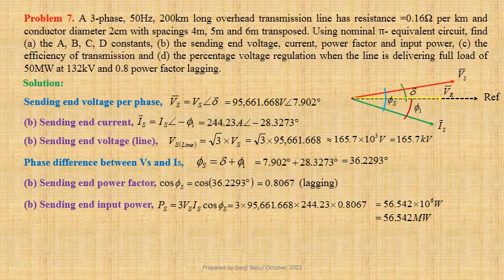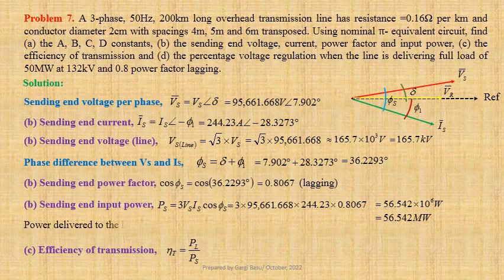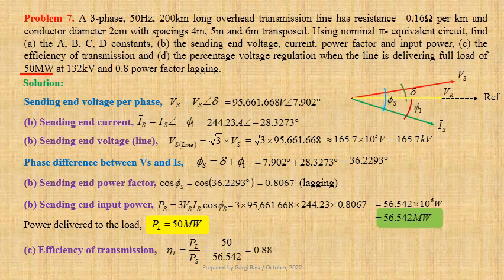Now we shall calculate efficiency of transmission: ηt equals to PL divided by PS. Given power delivered to the load PL equals to 50 megawatts. Therefore, ηt equals to 50 divided by 56.542, that gives us 0.8843 per unit or 88.43%.